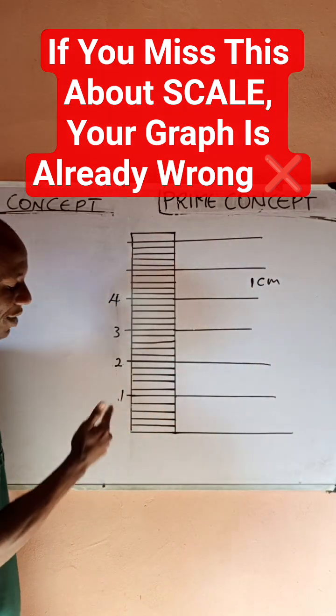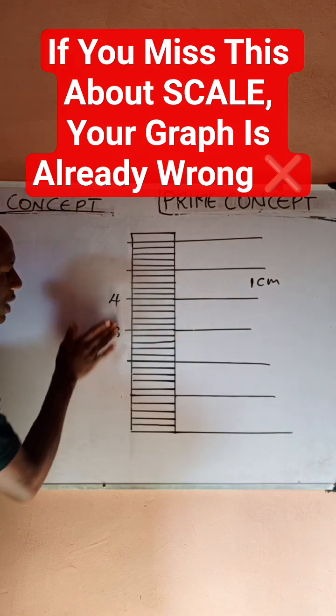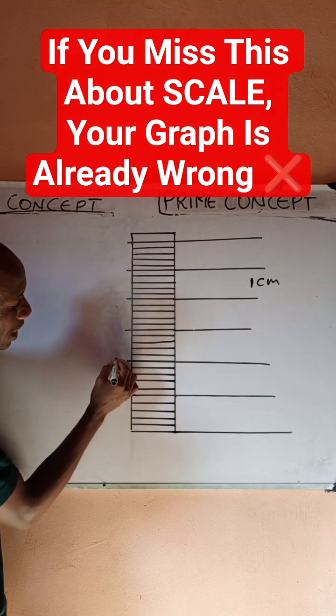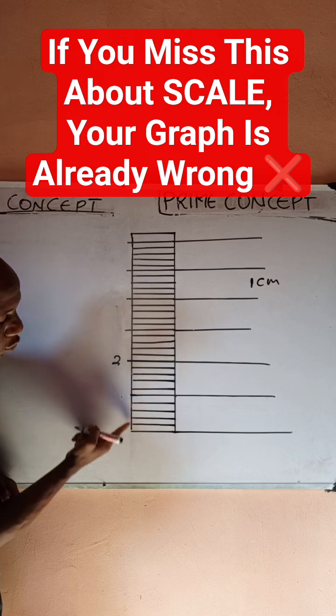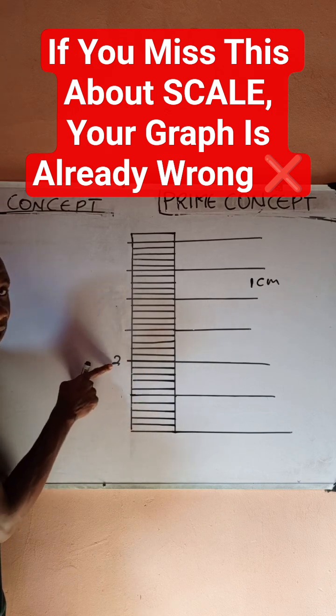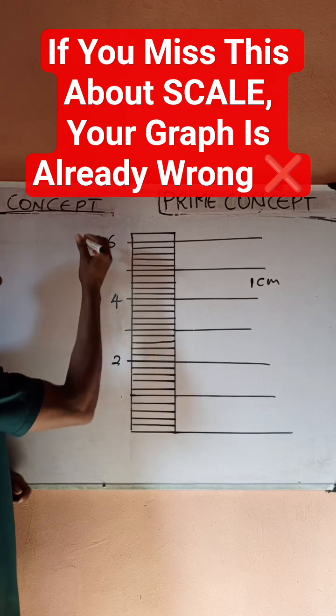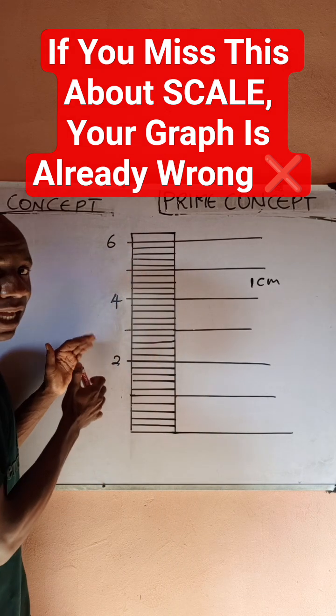Now I may decide to still choose a scale this way. Instead of starting from here, I will give two spaces and start from here as 2, then this should be 4, this should be 6, and so on. In this particular case, you would notice I'm no longer using 1 cm.